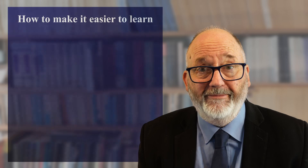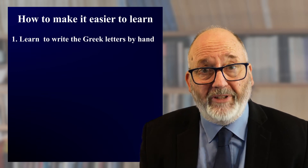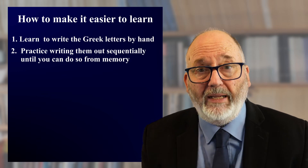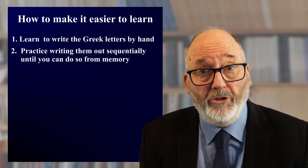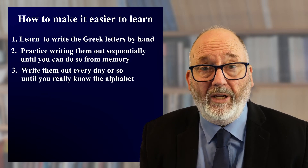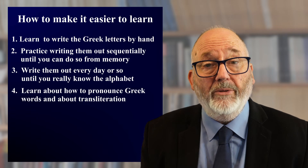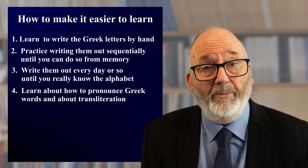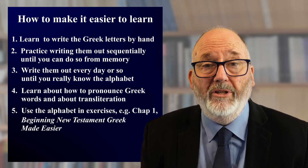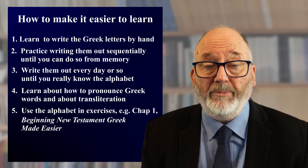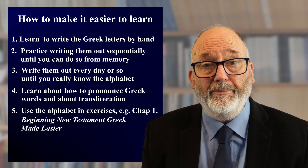You may be interested to hear how to make it easier to learn the Greek alphabet. First, learn how to write the Greek alphabet by hand. And once you've done that, learn to write out the Greek alphabet from alpha to omega by practicing writing it out sequentially. Keep doing this until you can do it, and practice every day or so until you know it's well established in your memory. The next step is to learn how to pronounce Greek words, and also the process of transliteration. Use this knowledge in some exercises using the Greek alphabet, such as the exercises found in Chapter 1 of my textbook, Beginning New Testament Greek Made Easier.